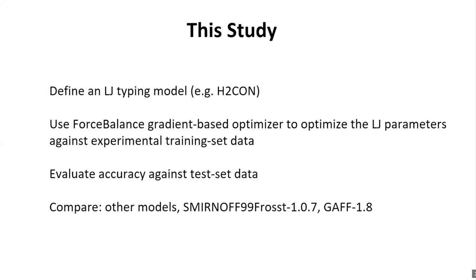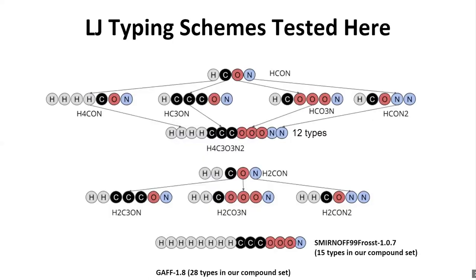The other parameters in these calculations are drawn from SMIRNOFF99Frosst. The Lennard-Jones typing schemes fall into several groups. The top group starts with HCON — one type per element, so all hydrogens are the same, all carbons are the same, etc. We then looked at splitting hydrogen types in a chemically motivated manner, splitting carbons, splitting oxygens, or splitting nitrogens, and taking all the splits together to make a 12-type model with H4C3O3N2. SMIRNOFF99Frosst has 15 types represented in the training and test sets, and GAFF 1.8 has 28 types in our compound set.